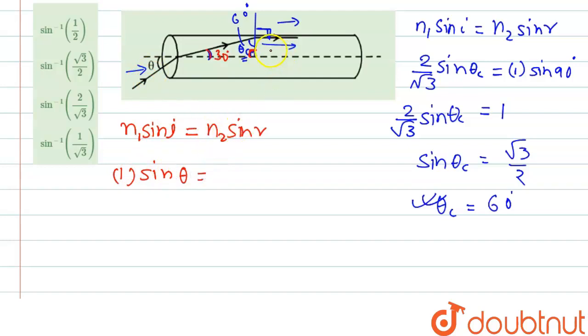And N2 is for refractive index for the material and that is 2 by root 3 and sin, the angle is 30 degree.